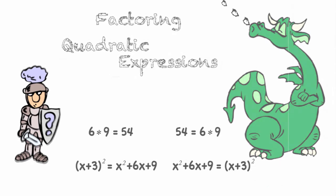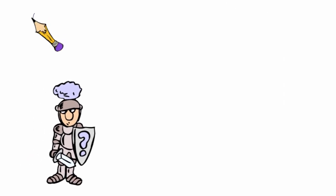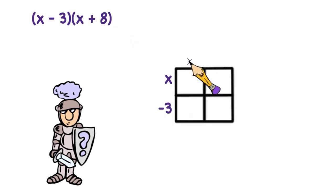So let's start our exploration by multiplying (x - 3)(x + 8). I'm going to do this using the box method. So x times x is x², x times 8 is 8x, x times negative 3 is negative 3x, and negative 3 times 8 is negative 24.